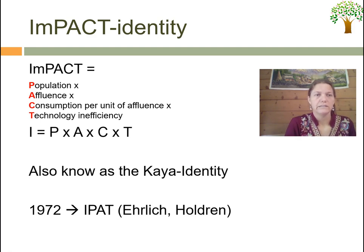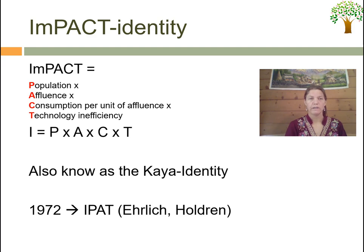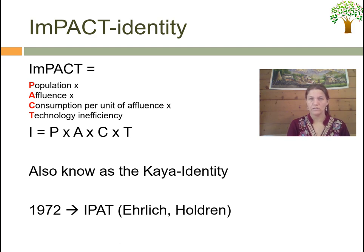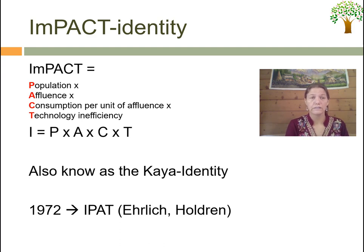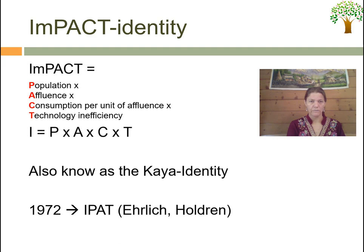Look now at the impact identity. The impact identity is an abbreviation which stands for the impact, which can be understood as population times affluence times consumption times technology. This is more of a theoretical model to understand — while Ayers was literally using it to calculate, it is more the idea to understand the multiple factors which are key to describing the impact which we have.